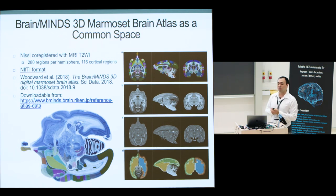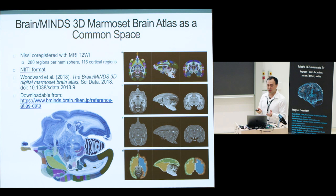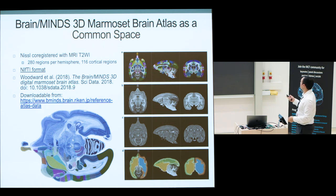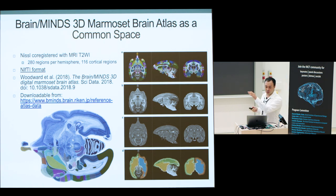I want to talk about the Brain Minds 3D marmoset brain atlas that is being developed. I worked on and published this atlas, and it is based on Dr. Hashikawa's cytoarchitectonic annotations, which are compatible with the Paxinos atlas nomenclature. This is one step towards interoperability. The key point is that the Nissl sections have been 3D reconstructed and aligned with the MRI T2 contrast. We have the parcellations, the brain boundary, the gray matter/white matter divisions, and an estimate of the mid-cortical surface. It's in NIfTI format, so it's very easy to use in your software.